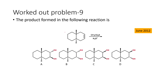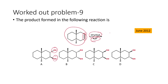Moving on to the next one — the product formed in the following reaction: we have a bicyclic system with a double bond, treated with a peracid. Peracids actually undergo epoxidation reaction — that is the main thing we have to focus on here. This is not simply a carboxylic acid but a peroxy acid. Peroxy acid followed by treatment with acid leads to the introduction of two hydroxy groups, because first there is the formation of an epoxide.